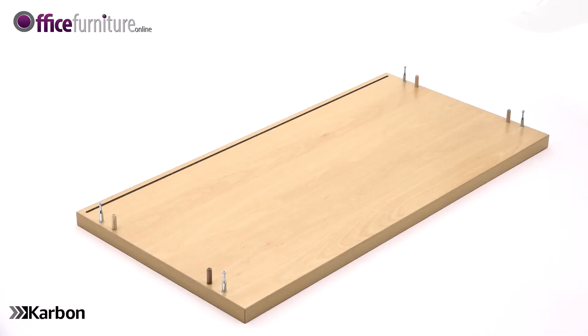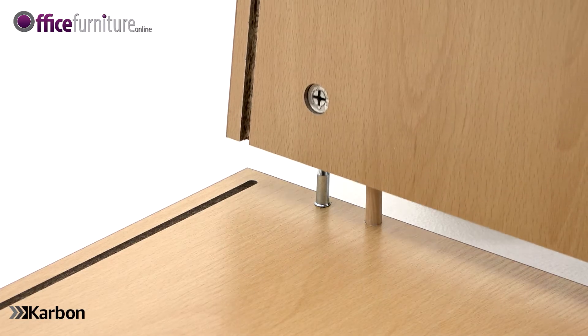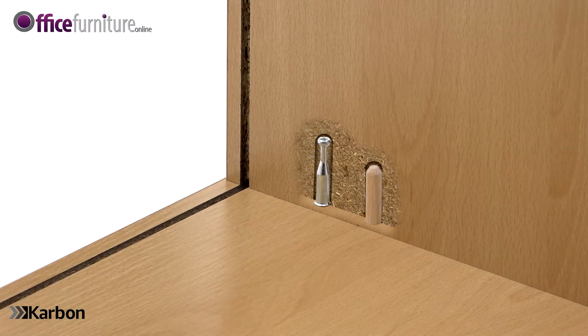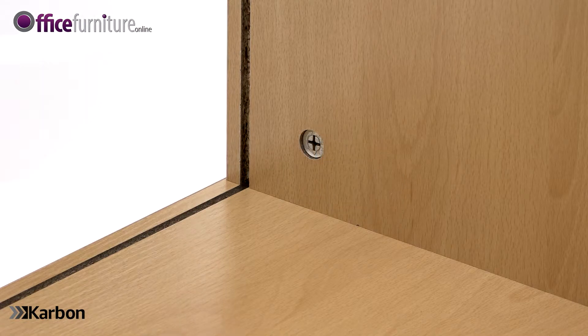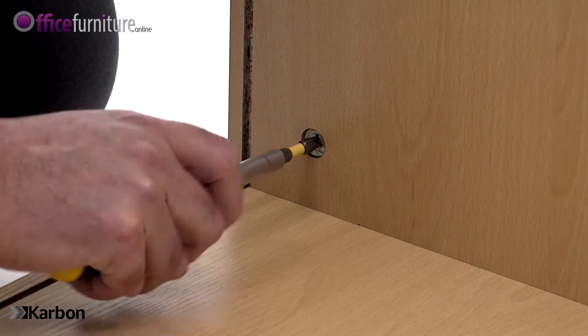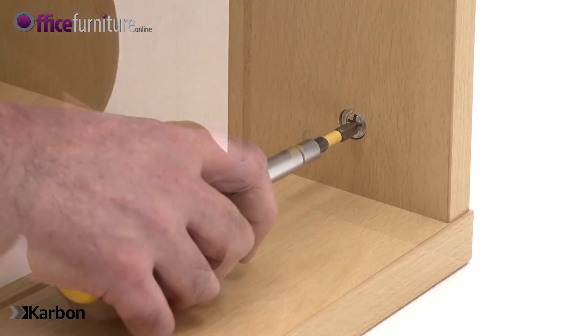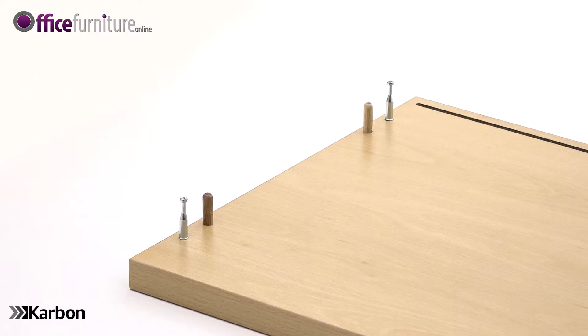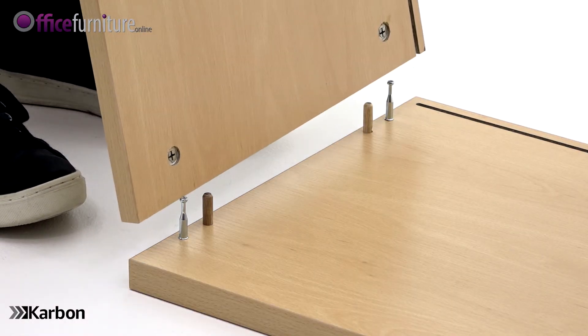With the top panel on the floor, push the side panels into position, lining up the holes in the side panels with the cam pins and dowels on the top panel. Tighten the cams until they lock, but take care not to over-tighten. Repeat this step with the second side panel.